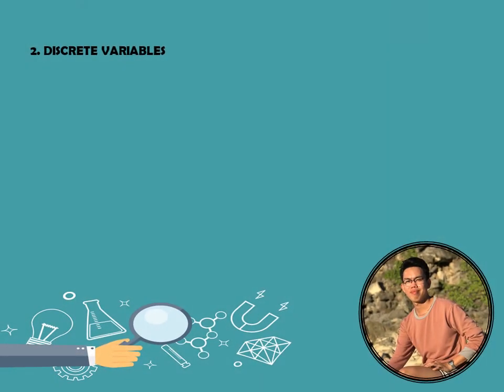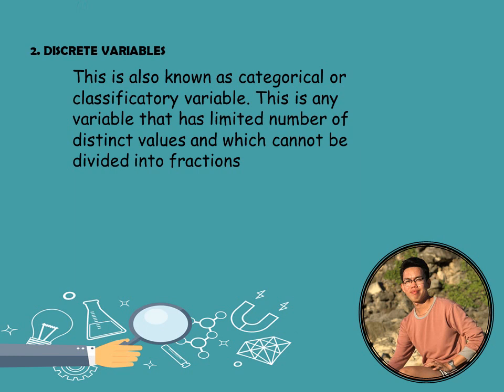The next type is discrete variables, also known as categorical or classificatory variables. This is any variable that has a limited number of distinct values and which cannot be divided into fractions; therefore, these are counted. They cannot be broken down into fractions or decimals. For example, sex — we have female and male. You cannot say someone is one-fourth male or one-sixth female. These are counted, unlike continuous variables which can be broken down into fractions.